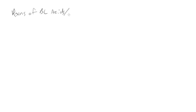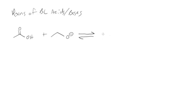We can look at reactions of Bronsted-Lowry acids and bases. You can take something that's a Bronsted-Lowry acid, like acetic acid, and react it with some kind of a base, like ethoxide. We'll write an equilibrium arrow to the carboxylate — that one's called acetate — plus the alcohol, ethanol.